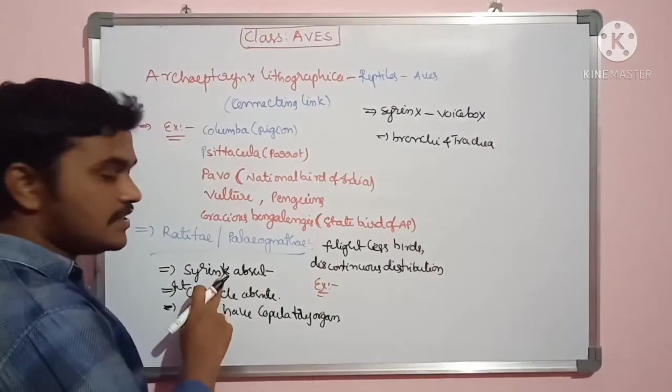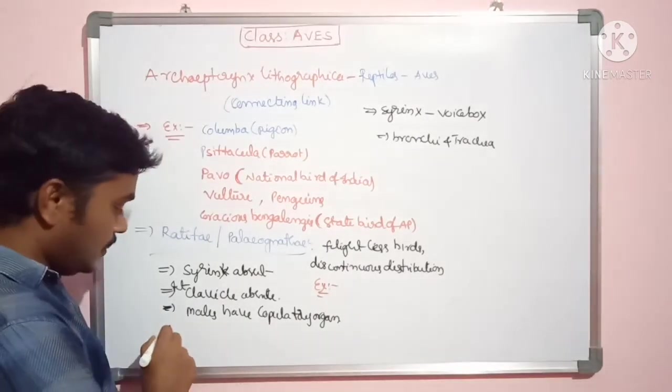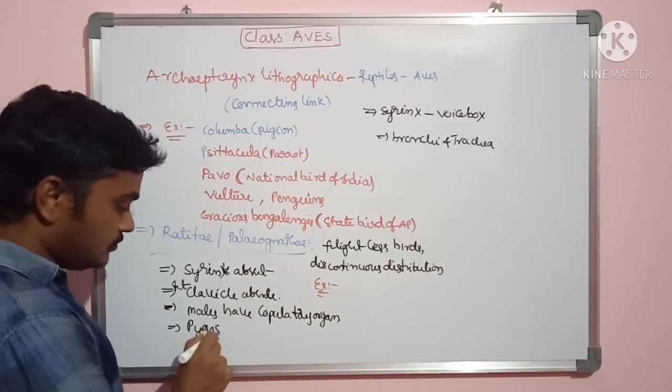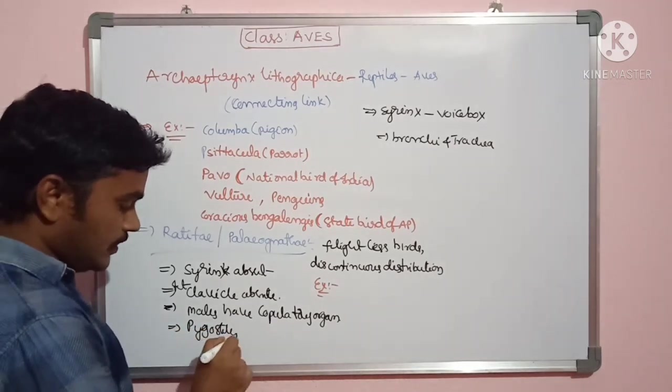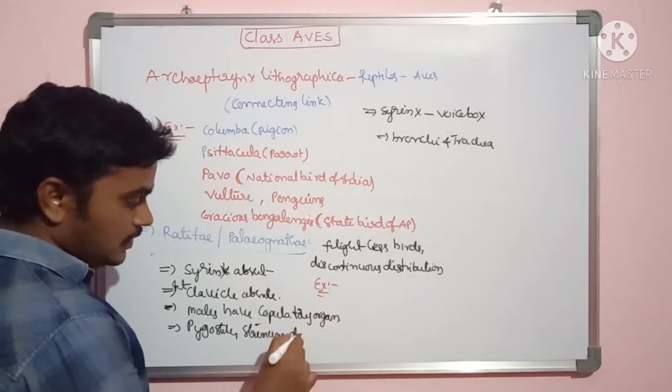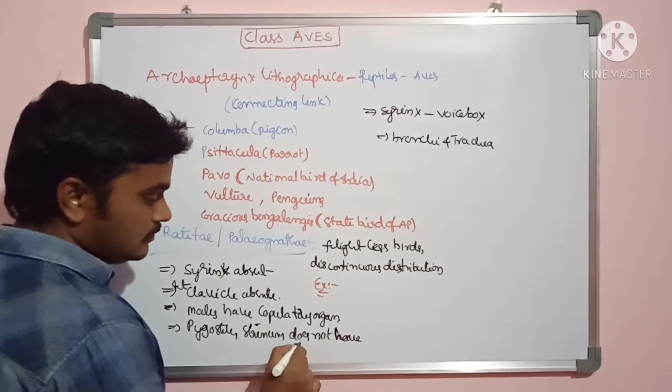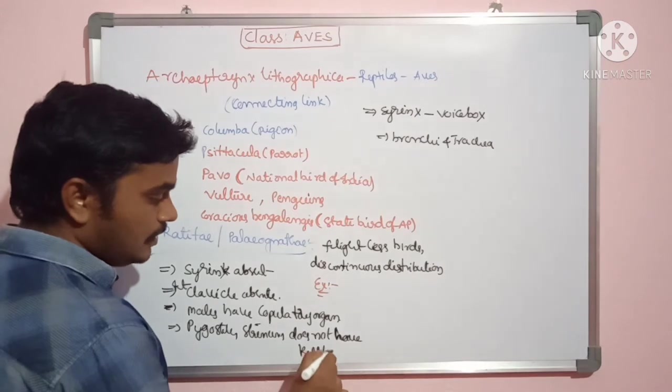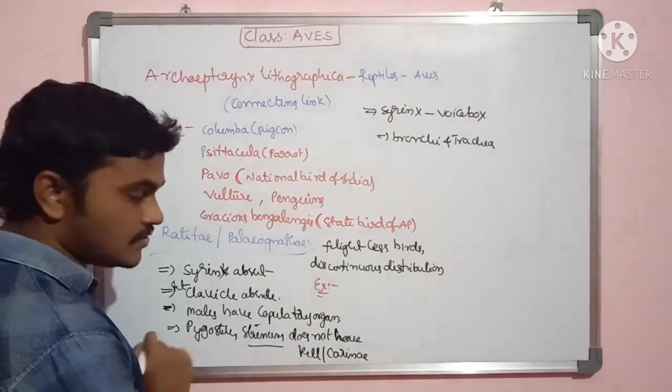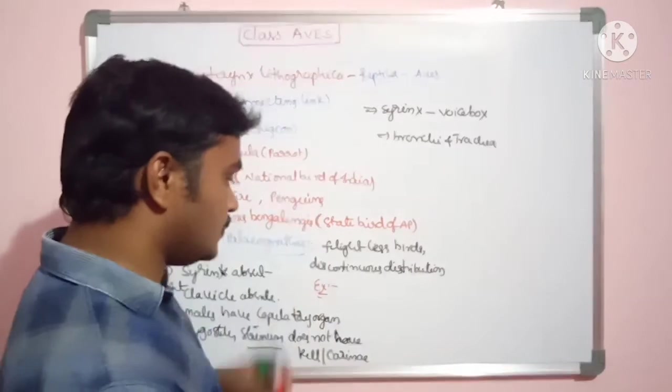In this case, syrinx is absent. Clavicles are also absent. Then sternum doesn't have a keel or carina. The supporting structures for the sternum are also absent in flightless birds.